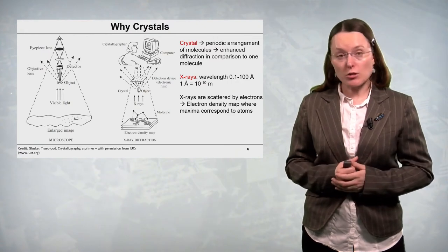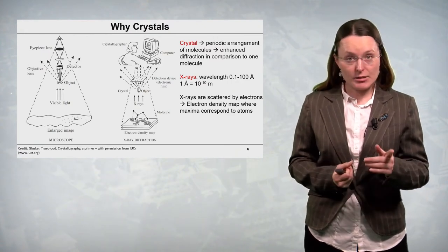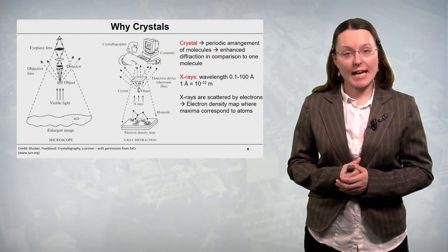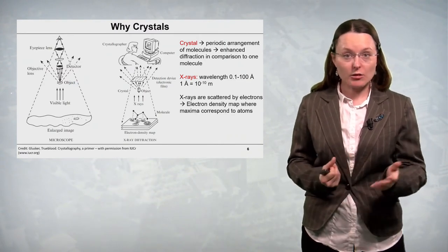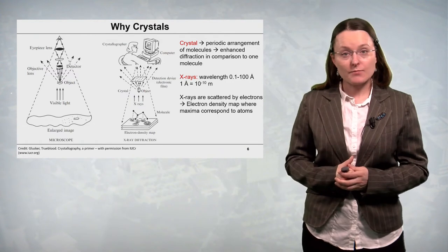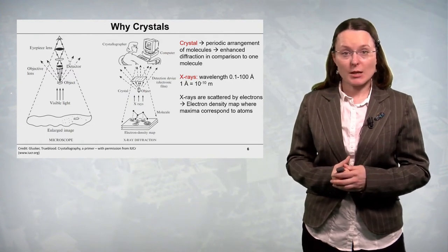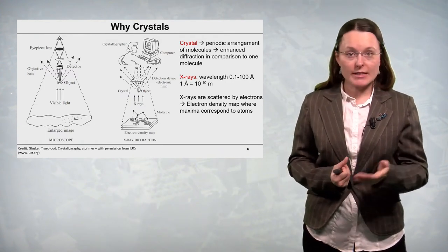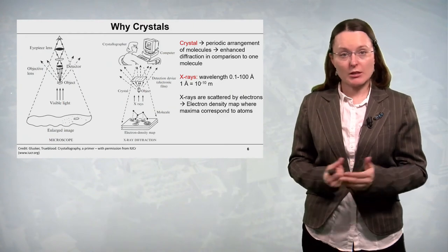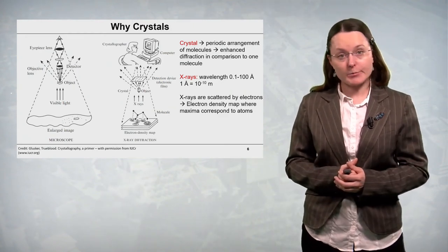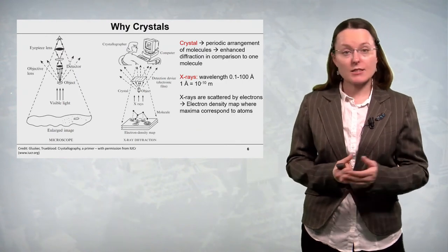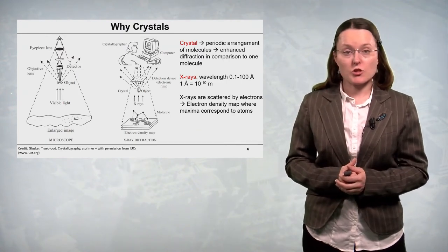Moreover, what we also have to realize, X-rays are scattered by electrons. Electrons are an important part of an atom and indeed we receive some information about the electron density map in the crystal. And we have to assume that the maxima of this electron density corresponds to the positions of atoms.